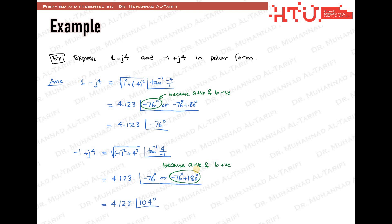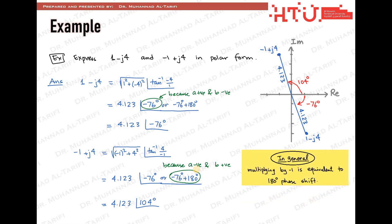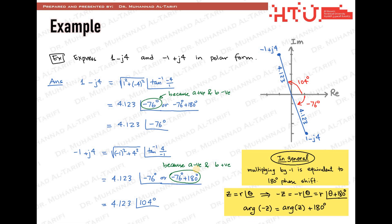Looking at both numbers in polar form, the only difference is a 180-degree shift in phase angle. This is also obvious from their representation on the complex plane. In general, flipping the sign of a complex number is equivalent to a 180-degree phase shift. In writing, r at the phase of theta multiplied by minus 1 equals r at the phase of theta plus 180 degrees.